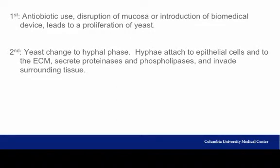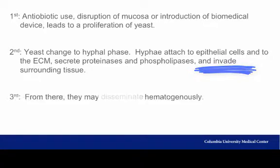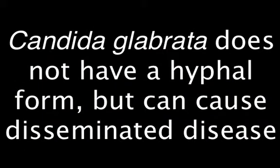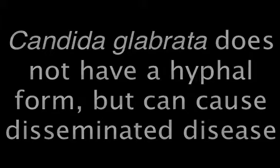As proliferation occurs, there is an instrumental change in the fungi, which switch from their yeast to hyphal forms. Hyphal forms make strong attachments to human epithelial cells and secrete proteinases and phospholipases to facilitate further tissue invasion. From there, hyphae may disseminate hematogenously and form micro or macro abscesses in major organs. Notably, this model is incomplete, as Candida glabrata may cause disseminated disease even though it is not capable of transforming into a hyphal form.